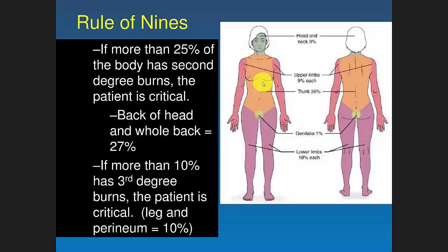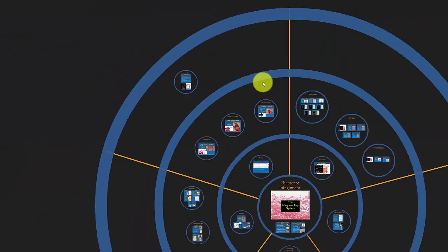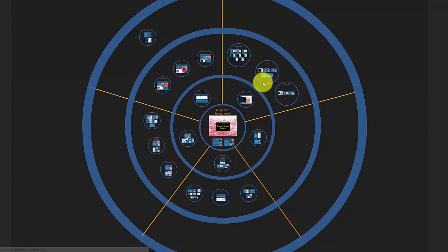For example: if one lower limb is burned at third degree, that's about 9%, which is not over the 10% threshold — not critical. If both lower limbs have third-degree burns, you're over 10%, so the person would be in critical condition. If the whole trunk has second-degree burns, you're over 25%, so the patient is in critical condition. That's the rule of nines, and that's the integumentary system.